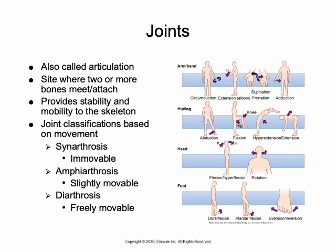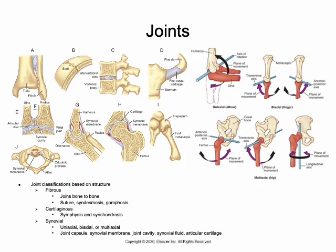Fibrous joints are joints where bone is united directly to bone by connective tissue. They have no joint cavity and allow little if any movement at all. The fibrous joints are subdivided into three types: sutures, syndesmosis, and gomphosis.